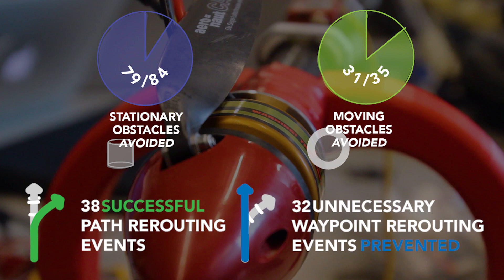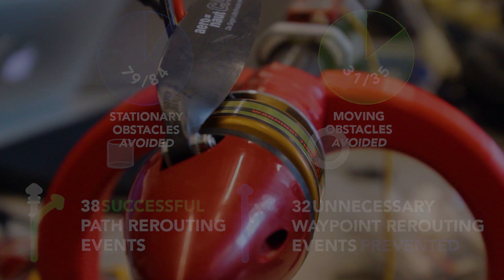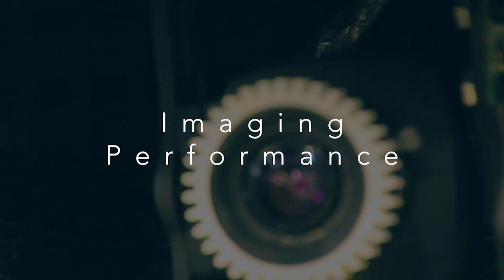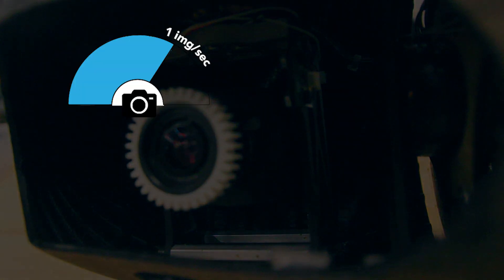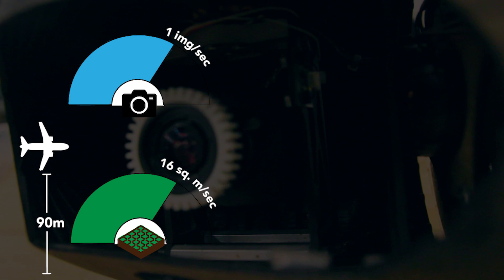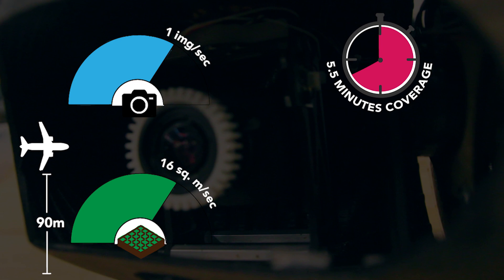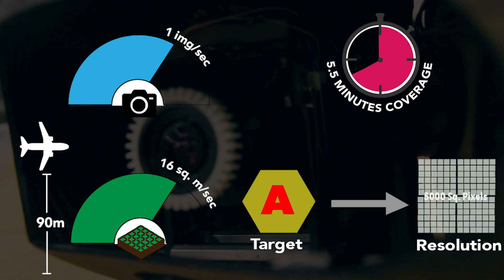All captured images have a resolution of 18 megapixels, and images are sampled at a rate of 1 image per second, to ensure full coverage of the field along the flight path. While flying at 90 meters, we can cover an area of 16 square meters per second, covering the entire field in about 5 and a half minutes. Each target of size 1 square meter has a resolution of 5,000 square pixels in the image.